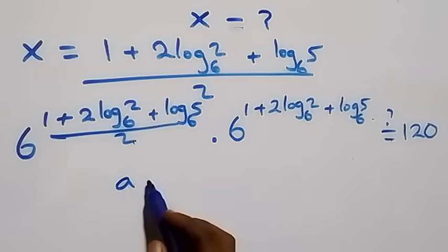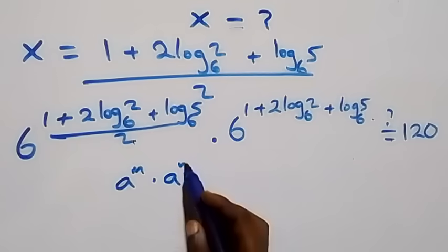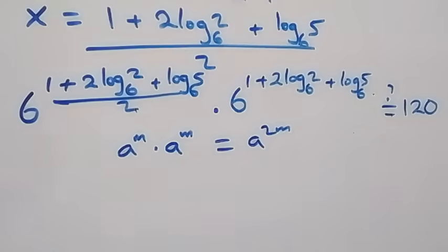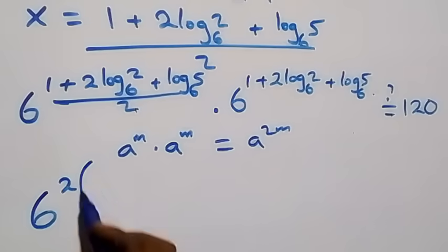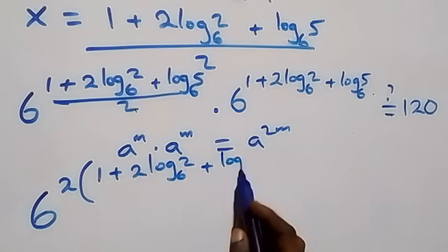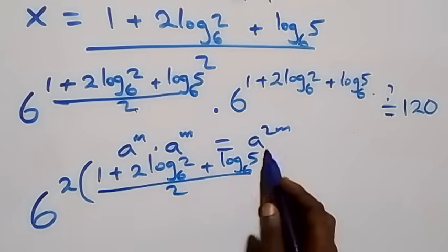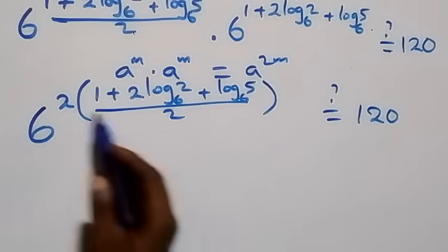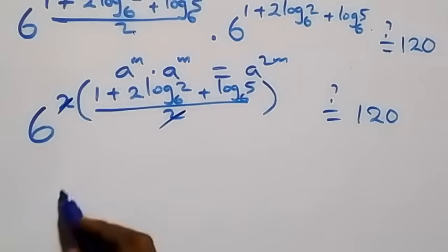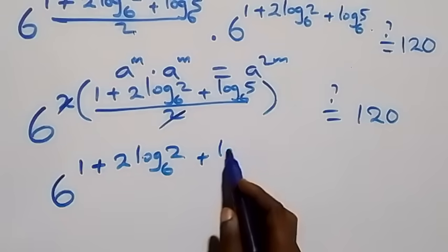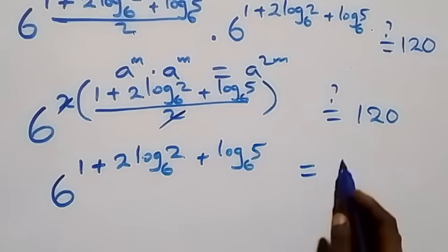When we have a raised to power m times a raised to power m, we can combine the powers, giving a raised to power 2m. So what we have becomes 6 raised to power 2 times (1 plus 2 log₆2 plus log₆5), all over 2. The 2 in the numerator and denominator cancel, leaving 6 raised to power 1 plus 2 log₆2 plus log₆5, equals 120.